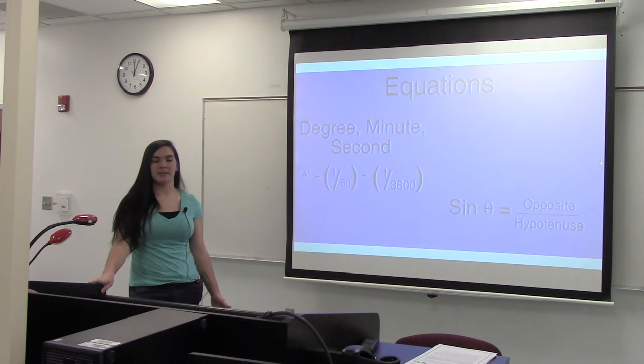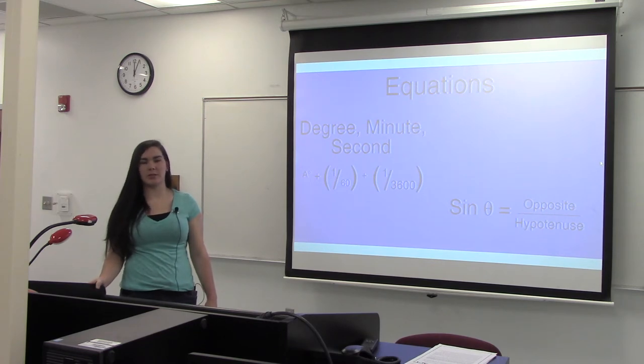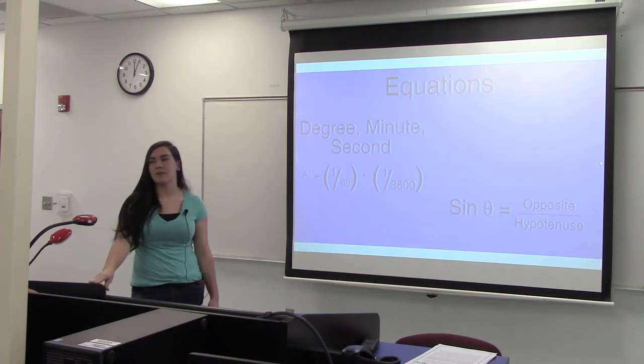For this problem it would have been 65 plus 44 divided by 60 plus 47 divided by 3600, which will give you roughly 65.75 degrees.